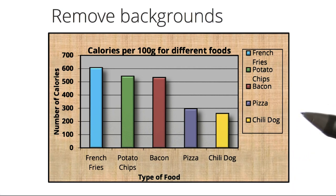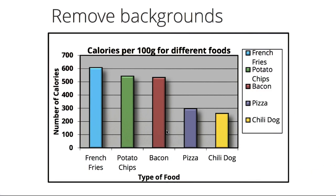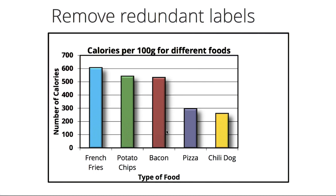Let's walk through, step by step, how we can simplify this visualization and increase its data-to-ink ratio. First, let's remove the wood background from the outside and the gray background from the inside, increasing contrast and legibility. We can also remove redundant labels, such as the legend and some of the titles, as this information is encoded elsewhere.